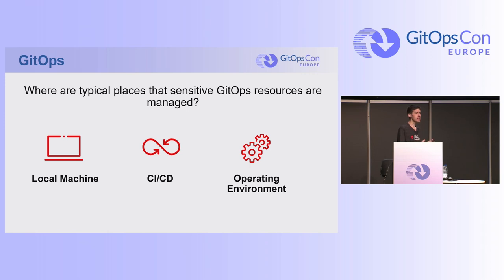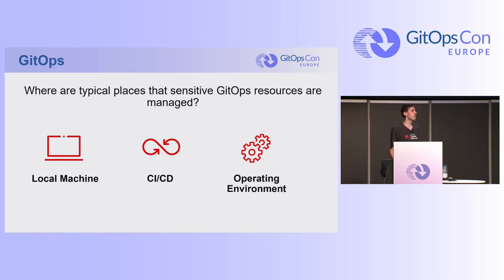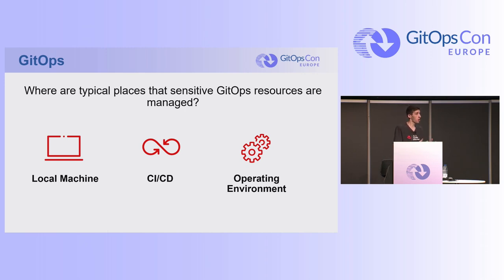Where are the different ways that you can manage GitOps? You have to manage them on your local machine using command line tools. They're going to be technically part of your CI/CD process, so they're going to be in your pipelines. And then most importantly, they're going to be in your operating environment — where you're actually using your GitOps principles and values.